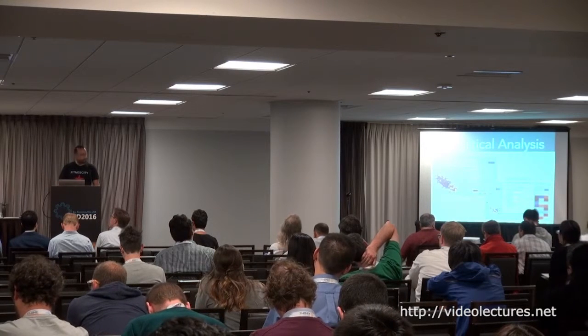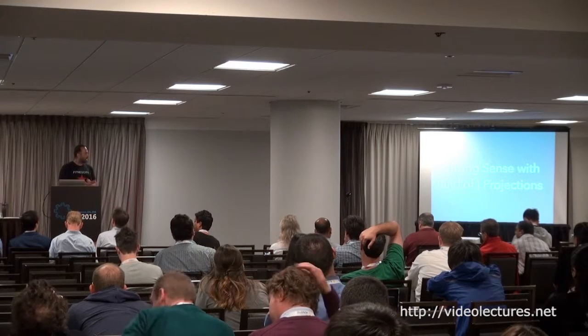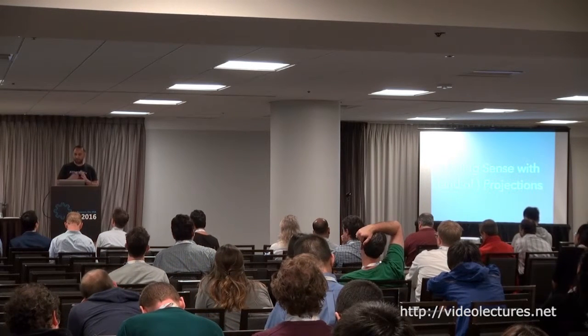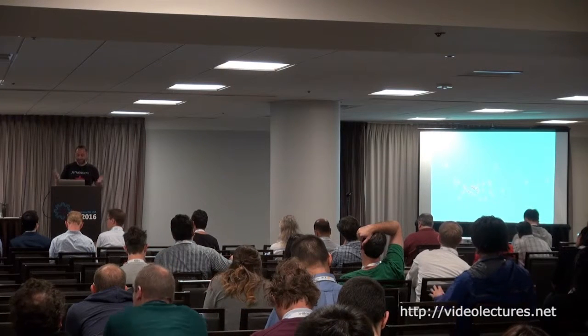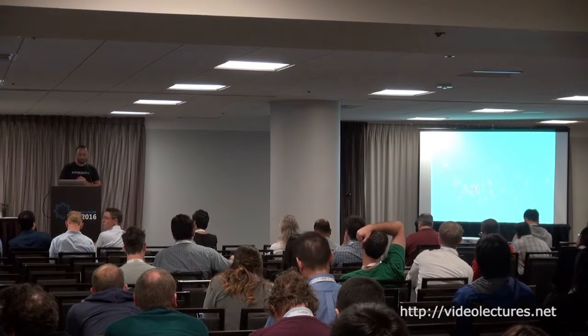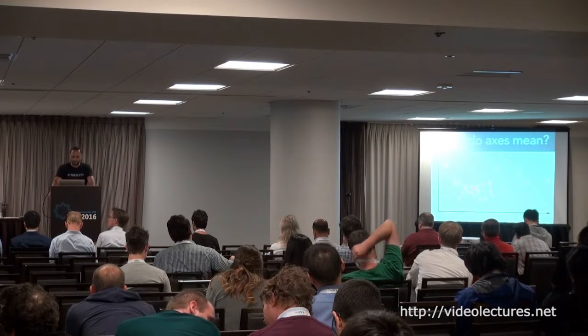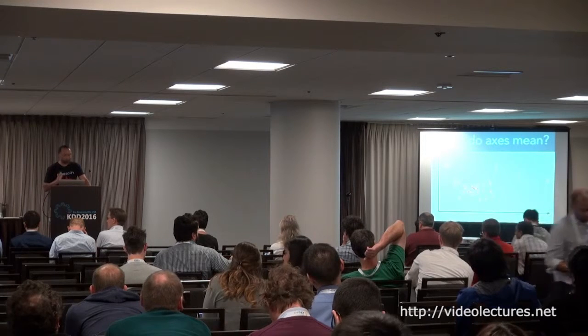I want to focus the remainder of the talk on two interaction methods we developed to make sense of those low-dimensional projections. Dimensional reduction and distance embeddings are used a lot — sometimes overused — but how to interpret them and make sense of them is not always clear. Here's a PCA projection of the dataset. The first question users ask when you show this kind of visualization is: what do the axes mean? What do the dimensions mean? We are experimenting with two interaction methods to help users reason about those representations.